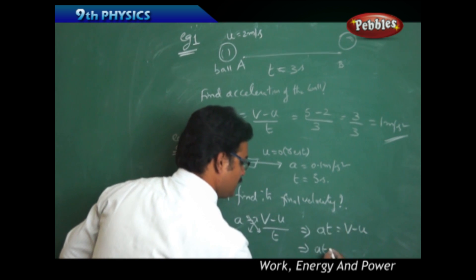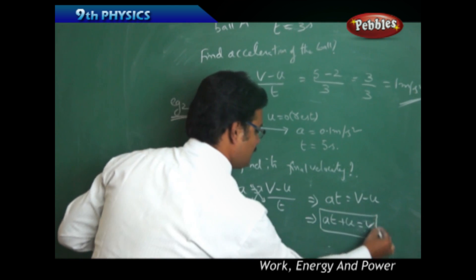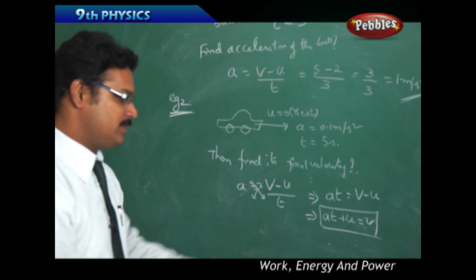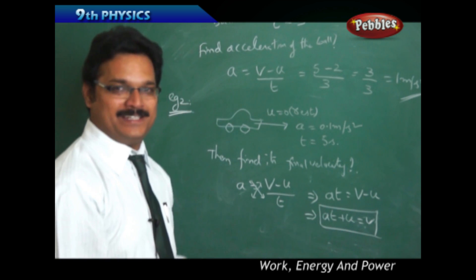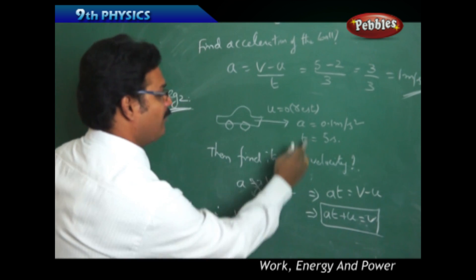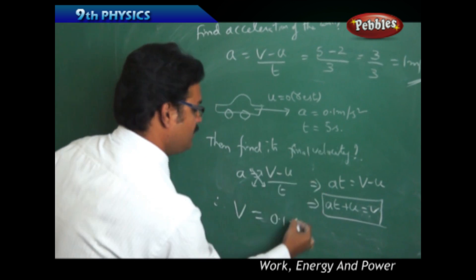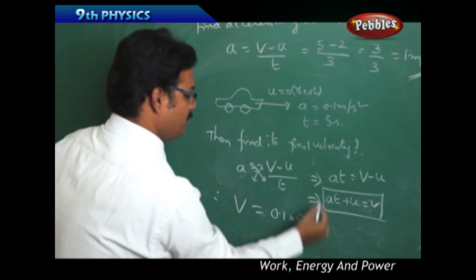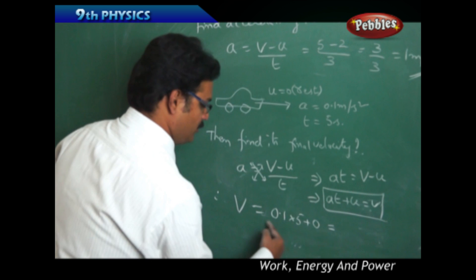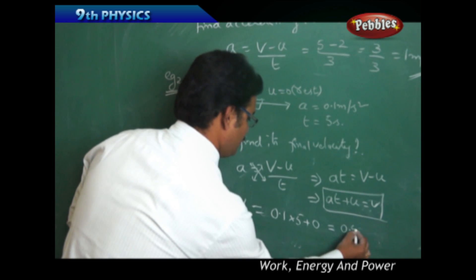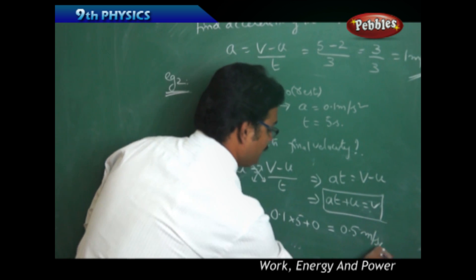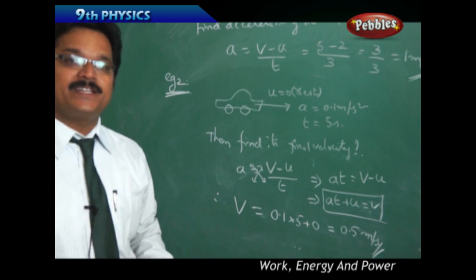Applying the formula V equals U plus AT: A is 0.1, T is 5 seconds, and U is 0. So V equals 0 plus 0.1 times 5 equals 0.5 meters per second. Therefore, the final velocity of the car is 0.5 meters per second.